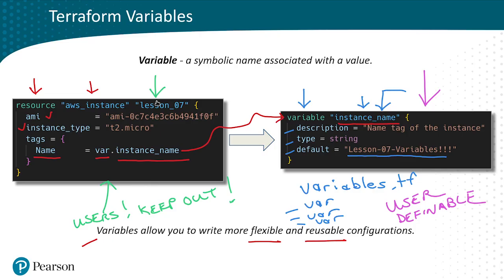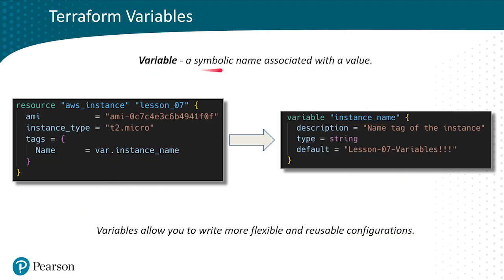Keep users within that variables file. To recap: a variable is a symbolic name associated with a value — in this case the symbolic name is instance_name and the actual value is 'lesson07-variables'. We call on that variable in Terraform with var dot and whatever the symbolic name is. Variables allow you to write more flexible and reusable configurations, and also prevent issues by stopping typical end users from modifying your main Terraform files.